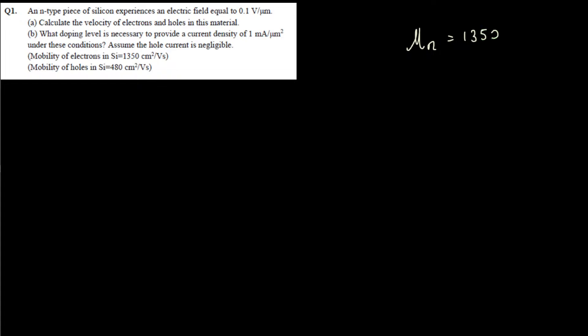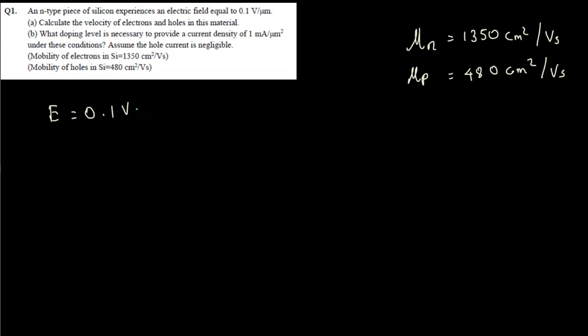The provided values are: mobility of electrons in silicon μn is given as 1350 centimeters squared per volt-second, and mobility of holes in silicon μp is equal to 480 centimeters squared per volt-second. The electric field E is given as 0.1 volts per micrometer.